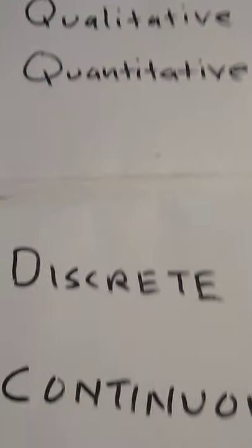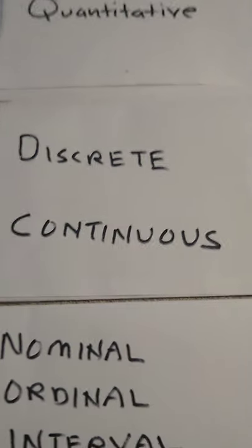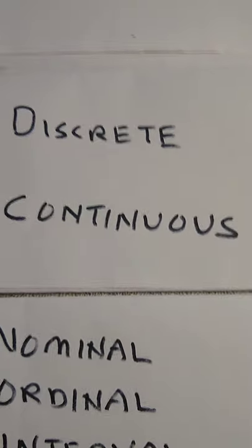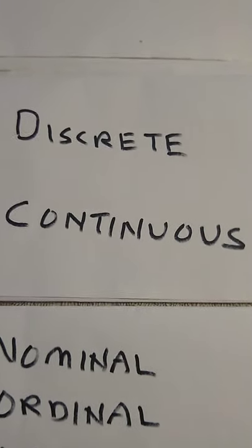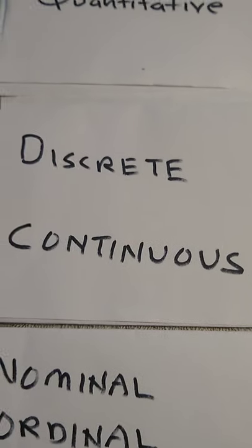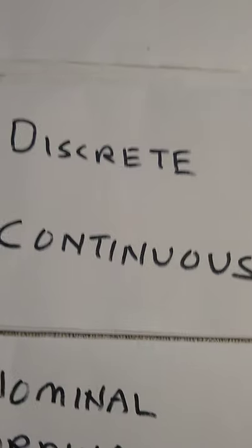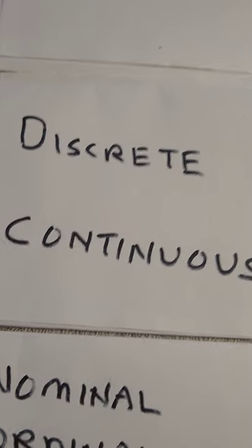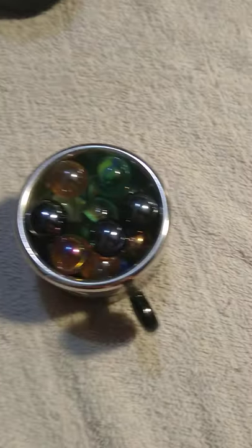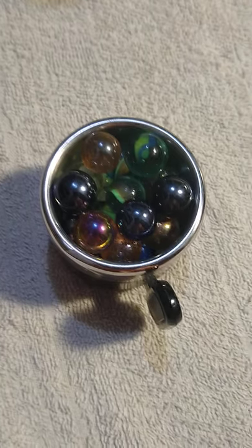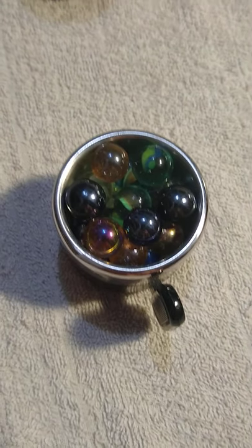Data can also be discrete or continuous. Discrete means a countable or limited number of possible descriptive or numeric values. Continuous means there is, theoretically at least, an infinite number of possible numeric values. By discrete, we mean that we can count the number of elements, objects, observations, or people in our data set. For example, this cup of marbles contains 20 marbles — that's discrete. We can count the number of marbles.